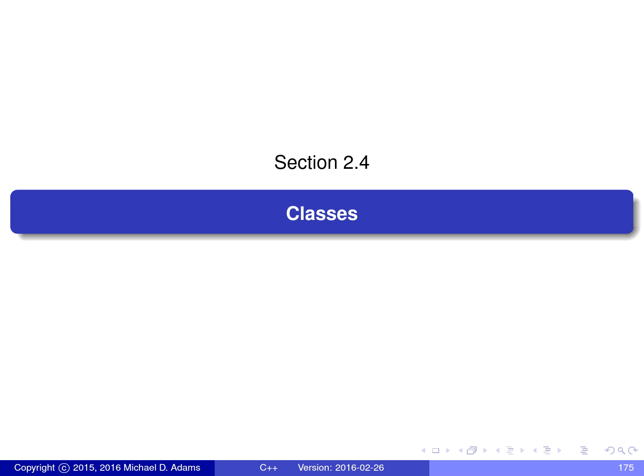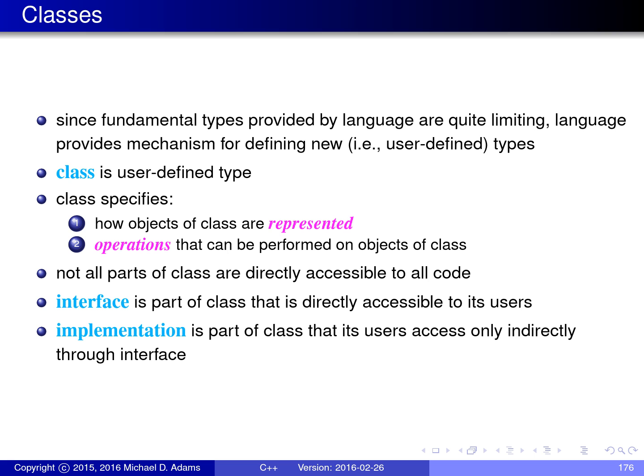In what follows, we're going to talk about the language feature of C++ known as classes, which are essentially user-defined types. As we know from earlier, C++ provides a number of fundamental types, such as the integral types and floating-point types. These types are very simplistic, and for this reason the language provides a mechanism for defining new user-defined types. An example of a user-defined type in C++ is what's known as a class.